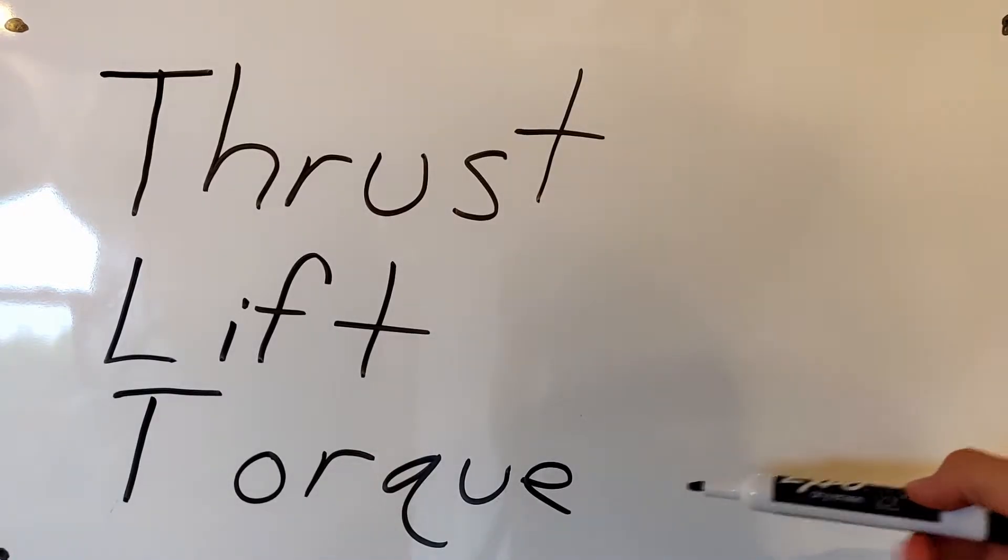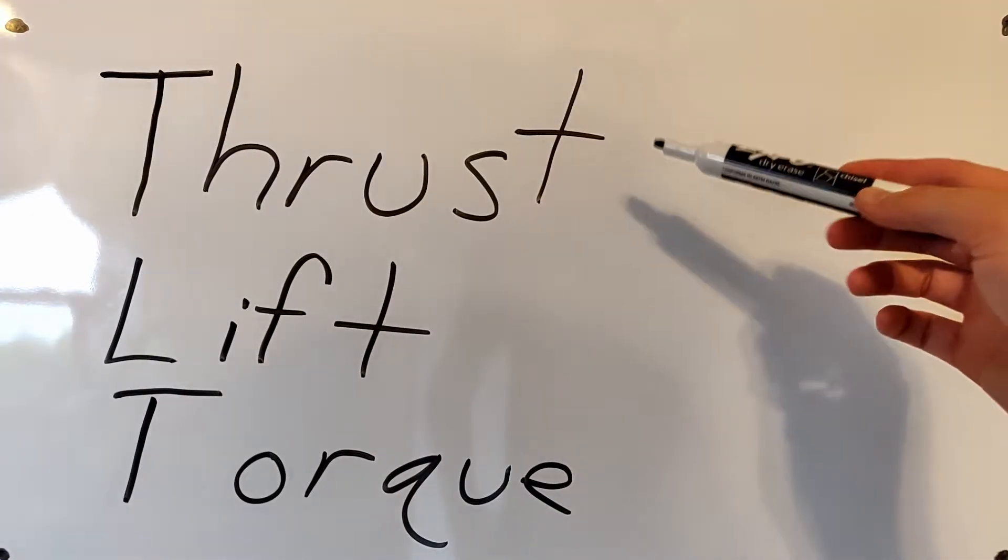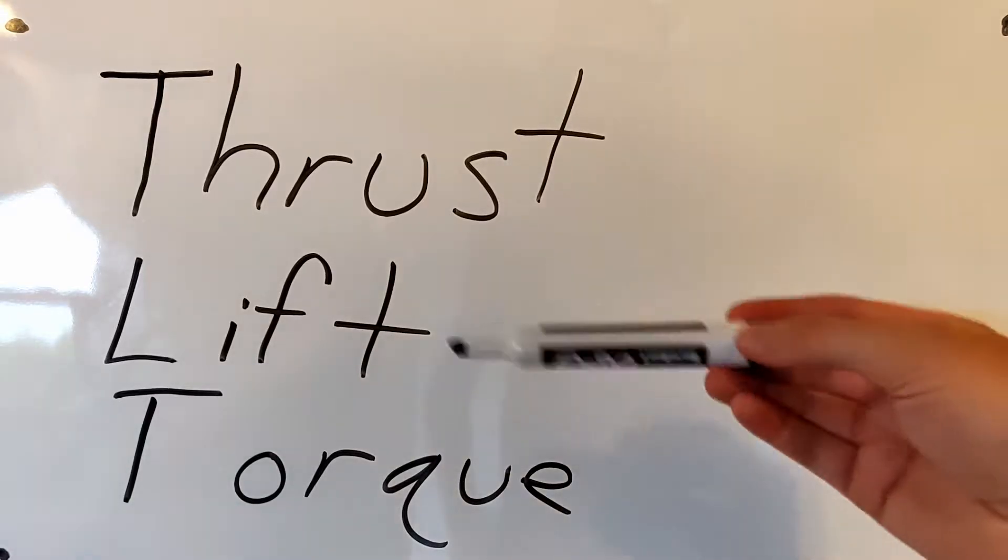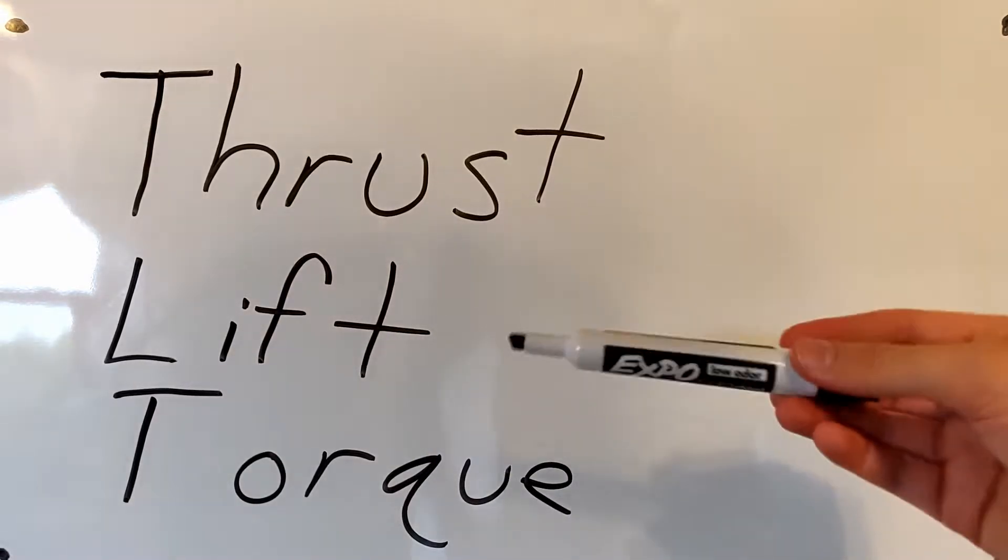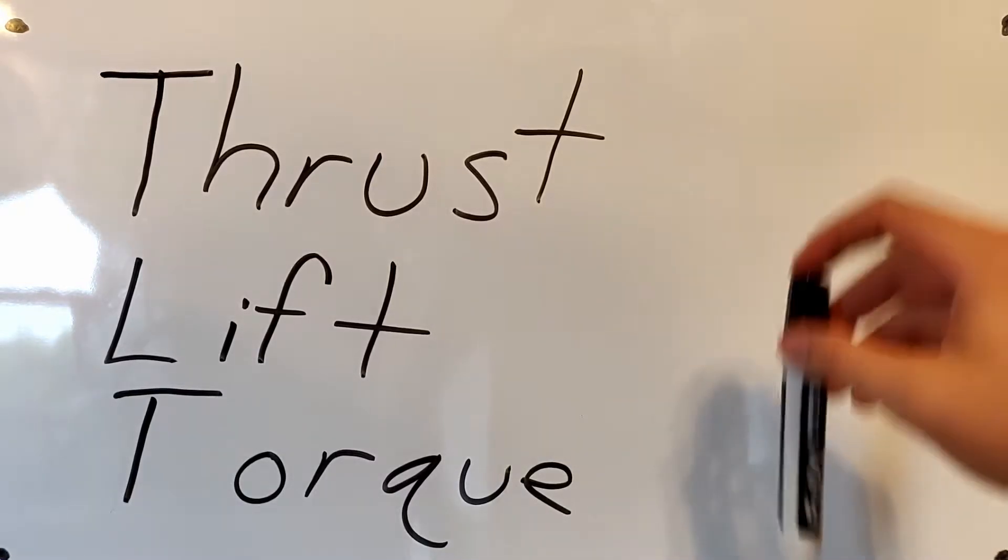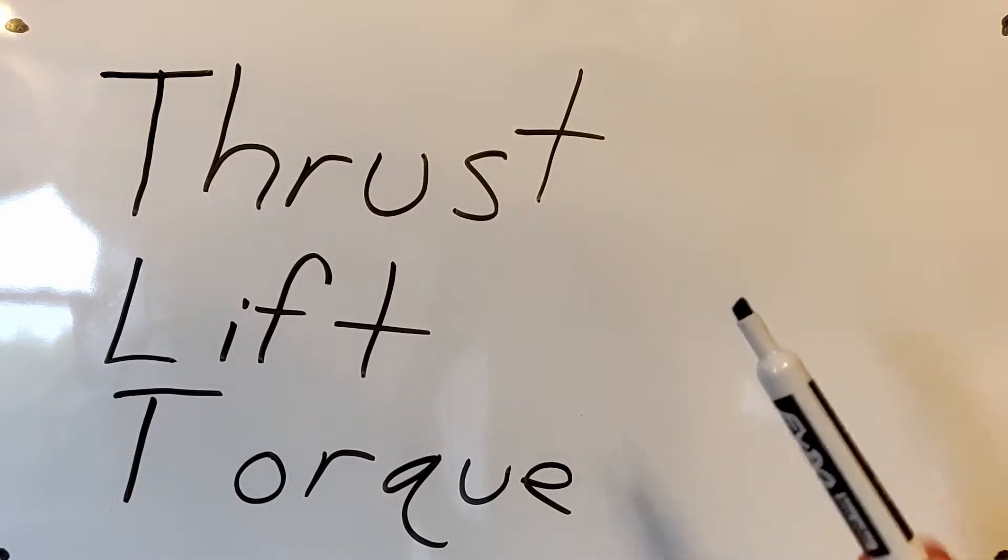Thrust, lift, and torque. Thrust is a pushing force and can be acting in any direction. Lift is a force that directly opposes the weight of the aircraft. So gravity will try and bring it down, the force of weight, and lift will keep it up in the air.